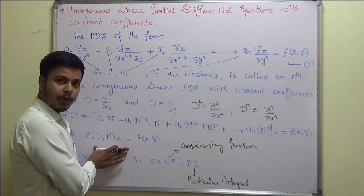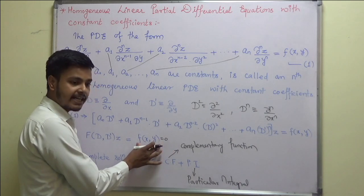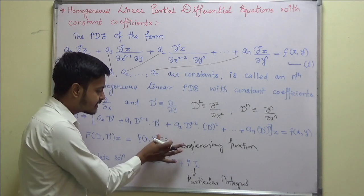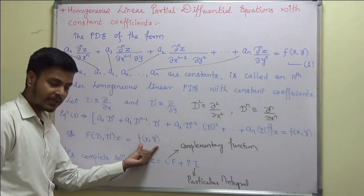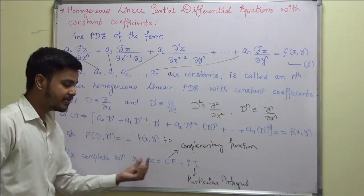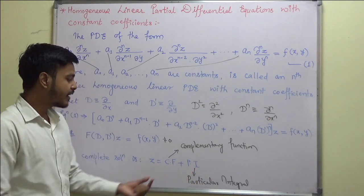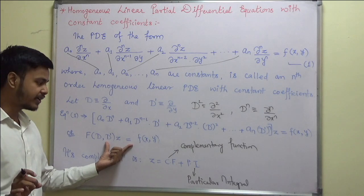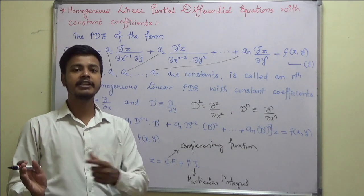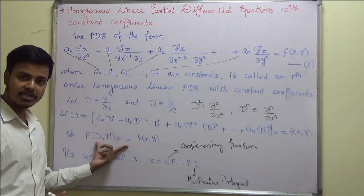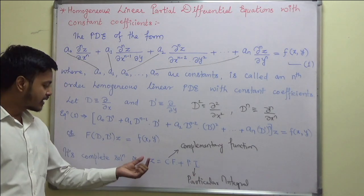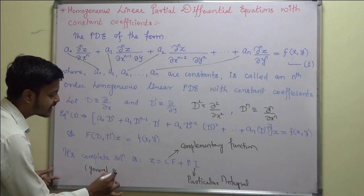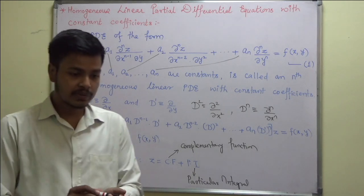If the right-hand side is equal to zero, then the complete solution would be z equals just CF. If the right-hand side is not equal to zero, then the complete solution would be z equals CF plus PI. And if the question says 'find the particular integral of this equation,' then you just need to find out PI. This complete solution is also known as the general solution.